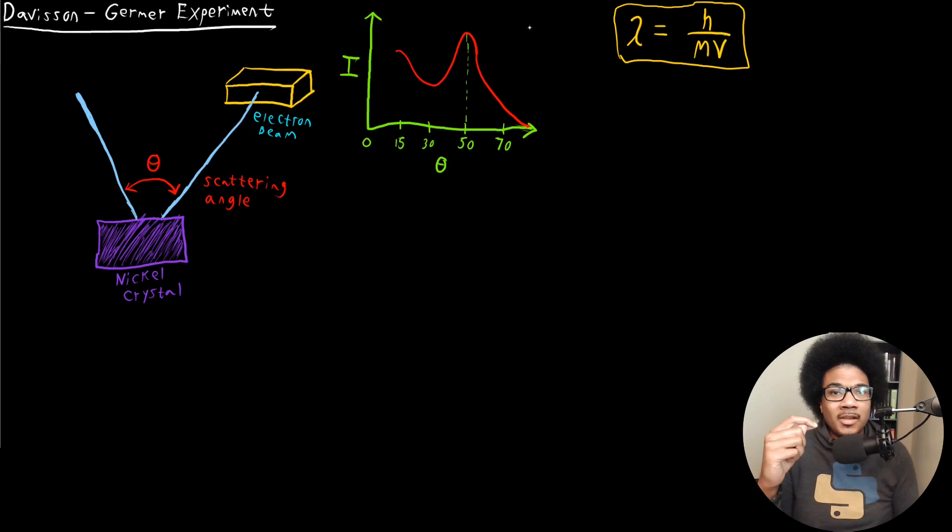So yeah, this shows that any moving object, anything in motion, has a corresponding wavelength. And the Davison-Germer experiment provided some experimental evidence for that.